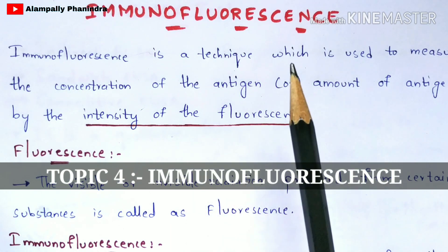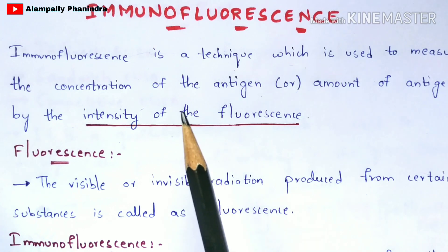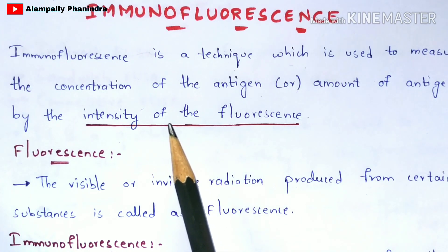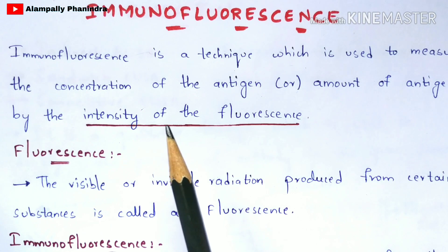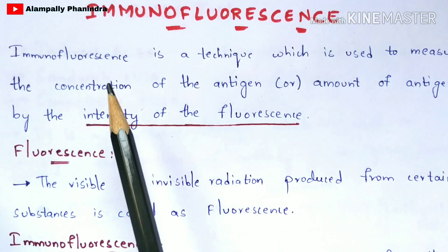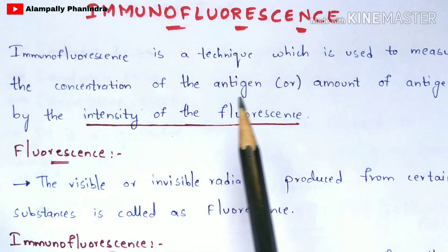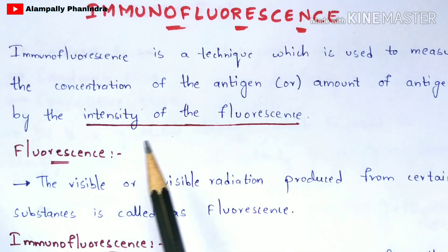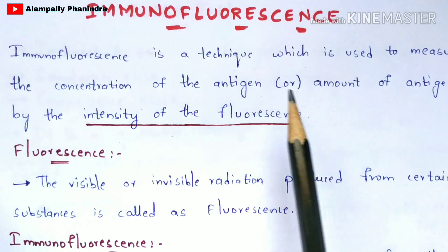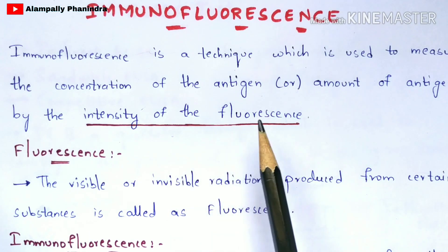In this video let us discuss in detail about immunofluorescence and what procedure is involved in it. The definition of the immunofluorescence technique: it is a technique which is mainly used to measure the concentration of the antigen, or the amount of antigen, by the intensity of the fluorescence.